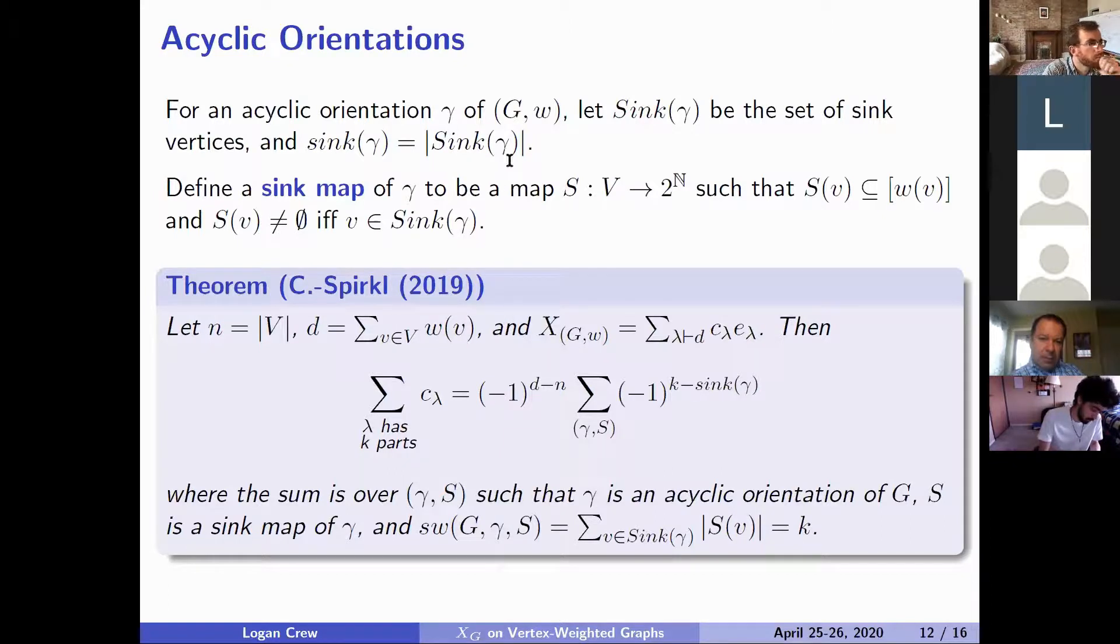But this is one where we're going to take a fixed acyclic orientation of our graph I'm calling it gamma. We look at its sink vertices and we define a sink map off of gamma to be a map on all the vertices of the graph that assigns a set of positive integers. That set is contained in the numbers one up through the weight of the vertex for each vertex separately.